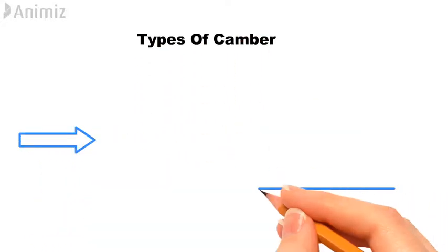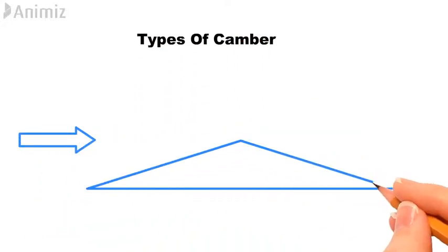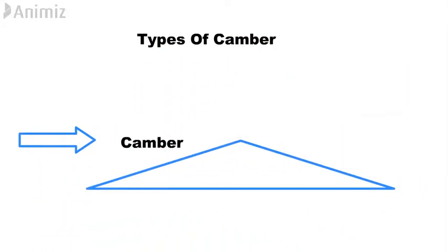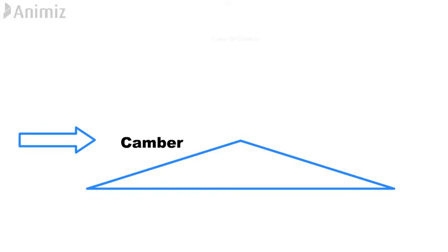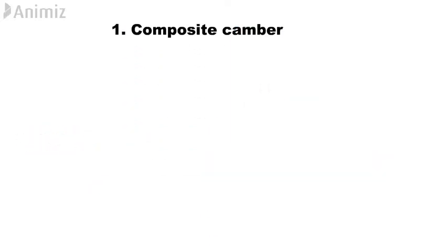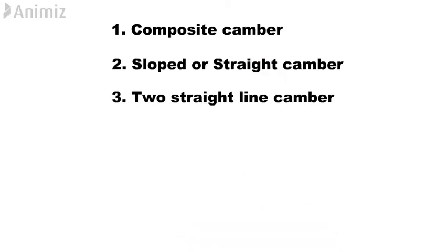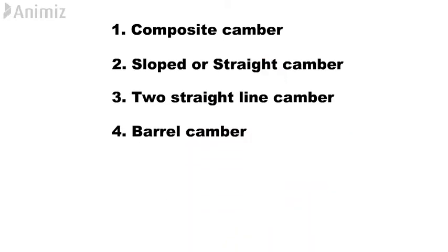Types of camber. The following four types of camber are generally provided to the road surface: one, composite camber; two, sloped or straight camber; three, two straight line camber; four, barrel camber.